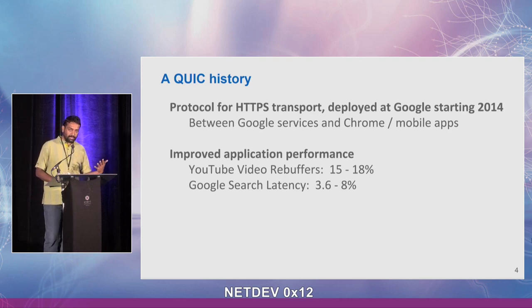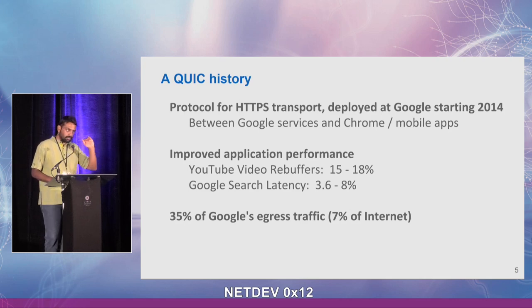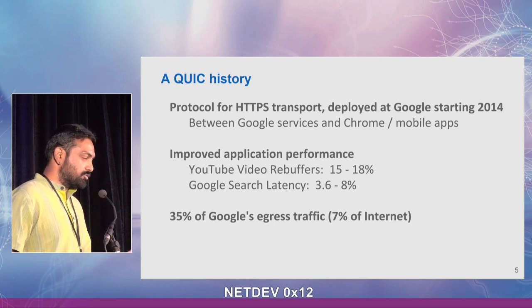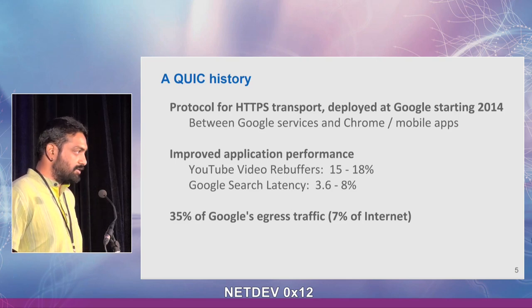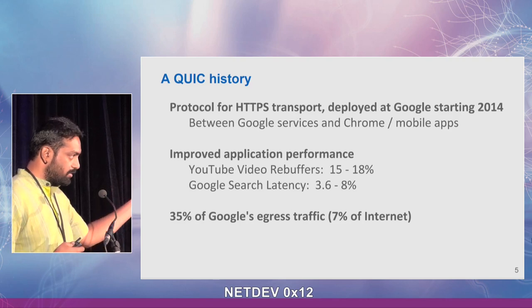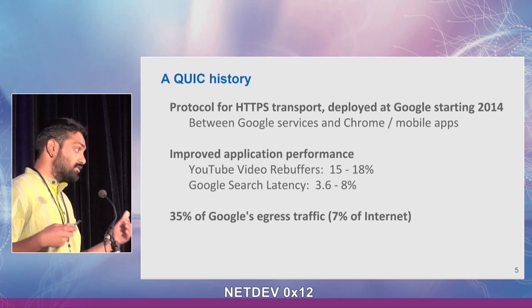Obviously we wanted more QUIC, more traffic to be using QUIC, and that's what we did. As of about a year ago, 35% of Google's egress traffic was QUIC. That's about 7% of internet traffic globally. This is why QUIC should be of interest to this group — it's effectively a transport that has wide deployment. As I will describe, the IETF process and other participants expect this number to grow.